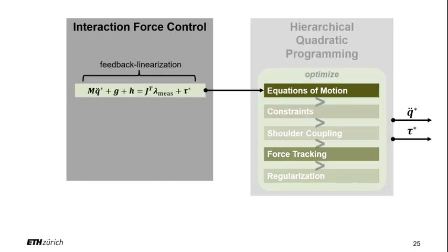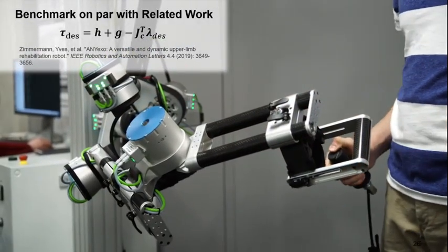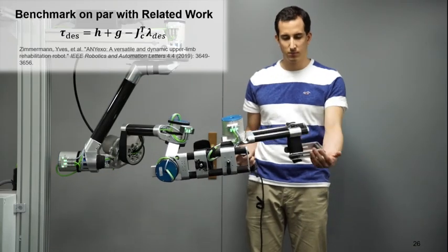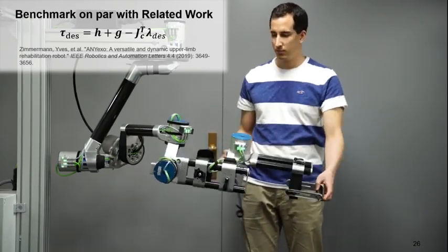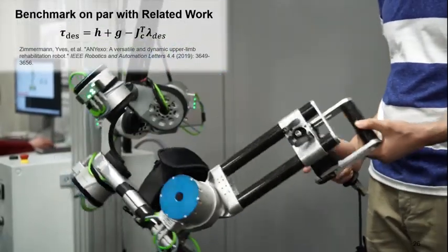To feedback linearize a closed loop system, we use a precise model of the robot and measurements of the interaction forces to the human. We could demonstrate that the speed for the compensation achieves on par performance with state-of-the-art closed loop systems in comparable robots. The advantage that was leveraged here is the precise torque control provided by our series elastic actuators.